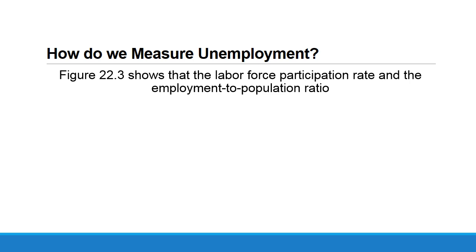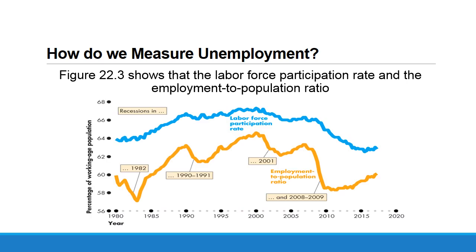The next figure shows the relationship between the labor force participation rate and the employment-to-population ratio in the U.S. economy. The yellow curve represents the employment-to-population ratio and the blue one represents the labor force participation rate. Both fluctuate over the business cycle, but the fluctuations in the employment-to-population ratio are higher than those in the labor force participation rate, because the labor force participation rate includes both the employed and the unemployed.